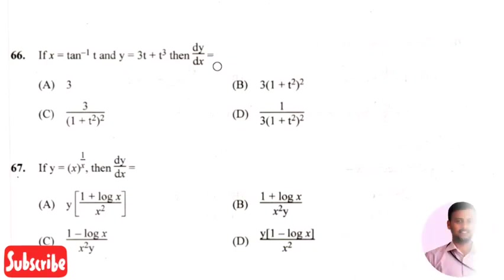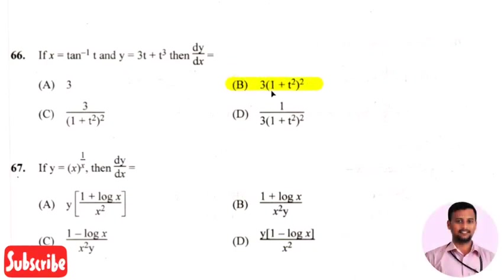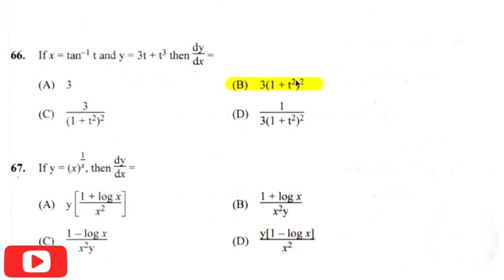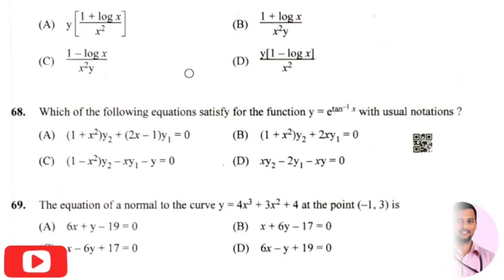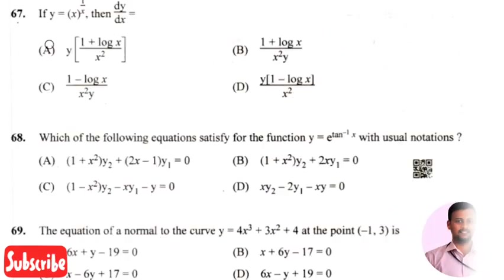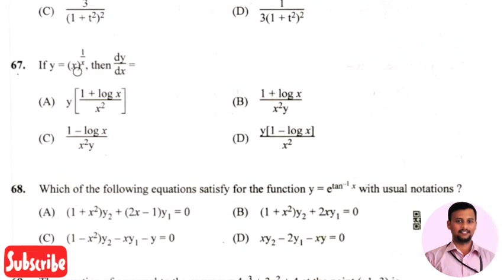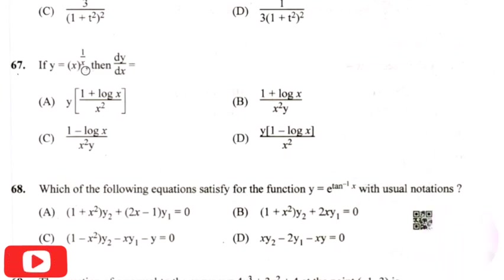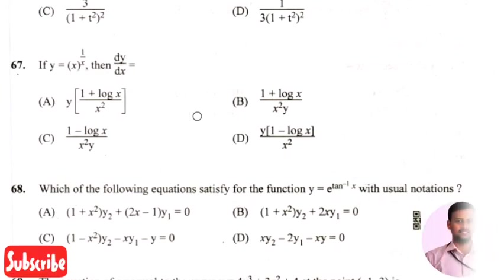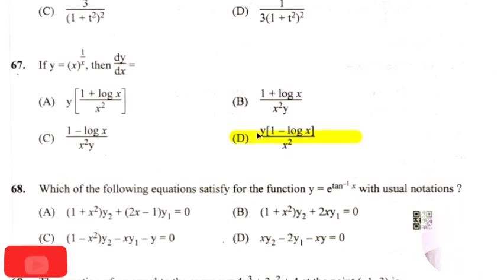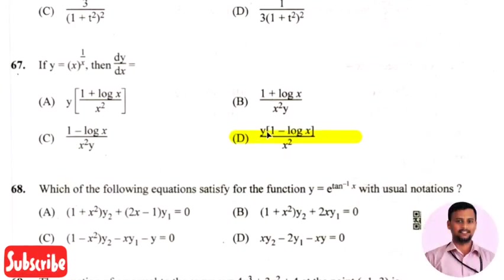The right answer is option 2, that is 3 times (1 plus t squared) whole squared. The next question: if y equals x raised to 1/x, then dy/dx is? The right answer is option 4, that is y times (1 minus log x) divided by x squared.